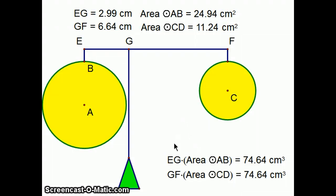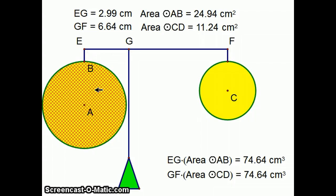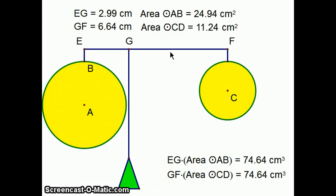if you multiply EG, which is the length from the fulcrum to the bigger weight, times the weight of the bigger thing, which is the area of the circle, in order for them to balance, GF multiplied by the weight of the smaller object has to equal the same constant, in this case, 74.64.